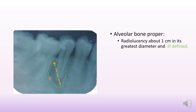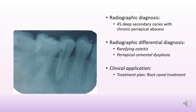For the alveolar bone proper, the radiolucency is fairly irregular, which is why we use the term ill-defined. In its greatest dimension the diameter is around 1 cm in size. Using the known root length of 14 mm as reference, this radiolucency would be around 10 mm, equivalent to 1 centimeter.